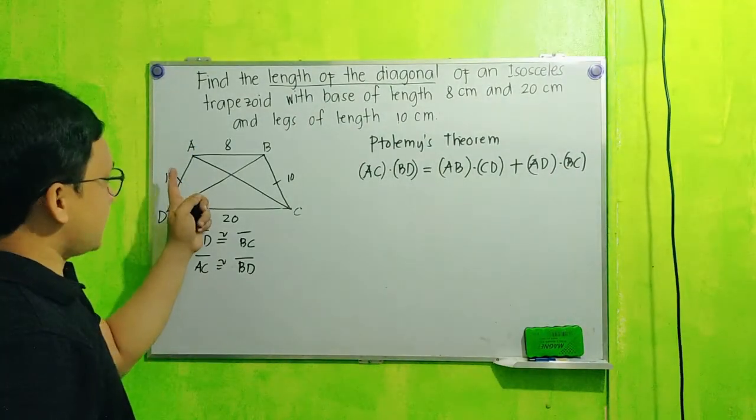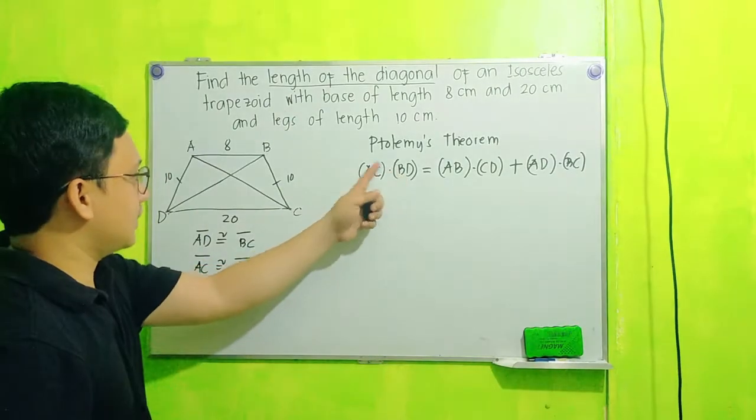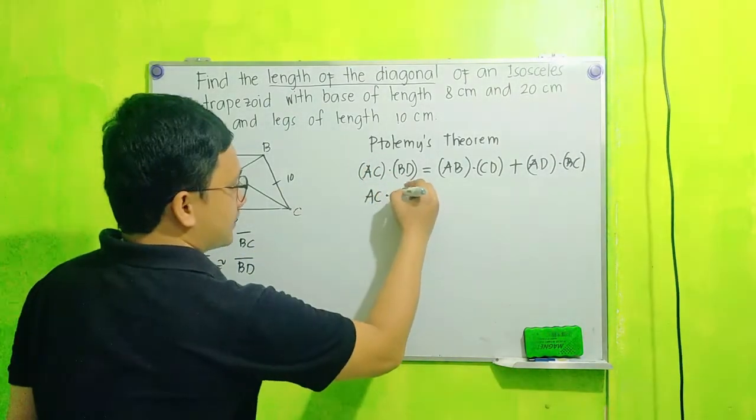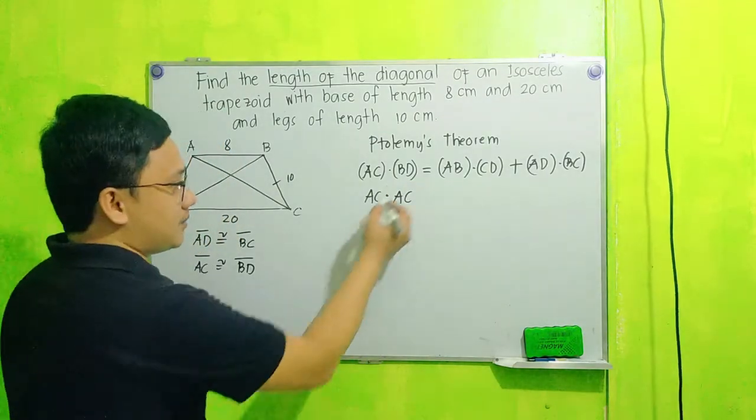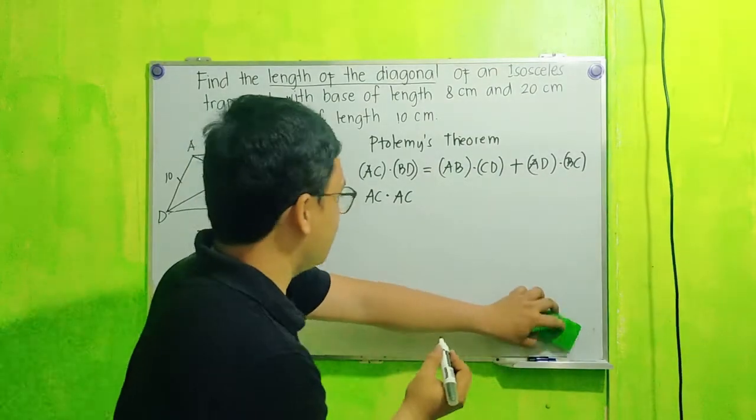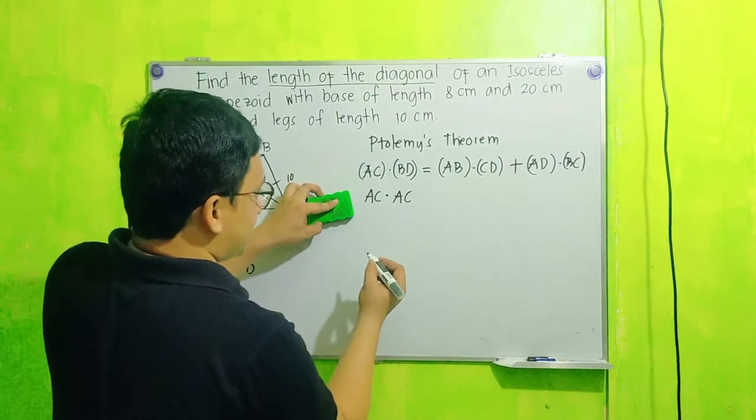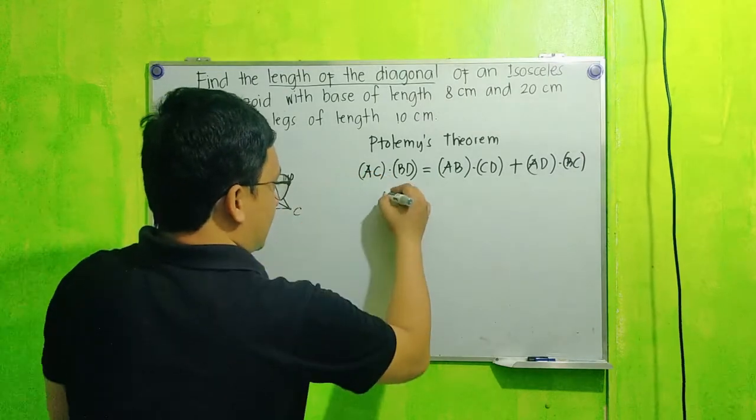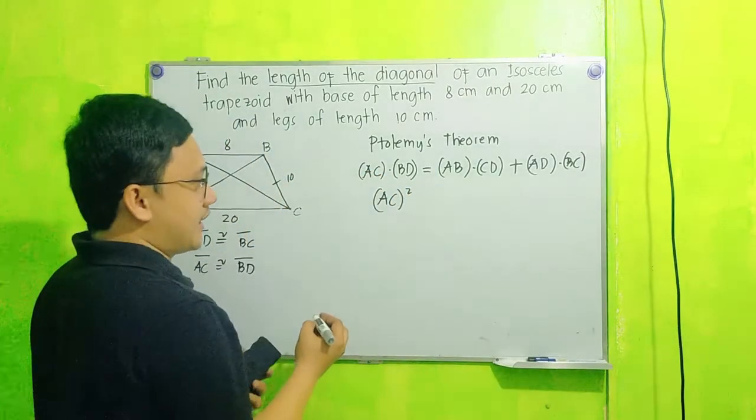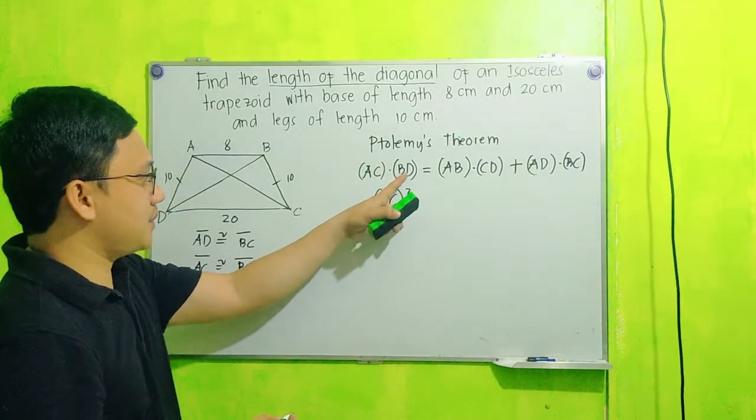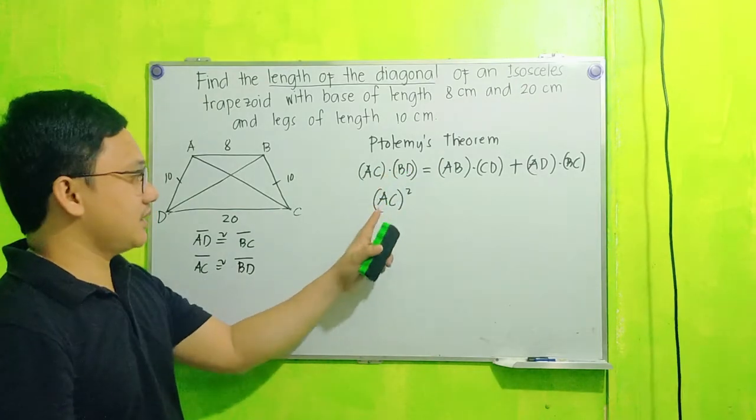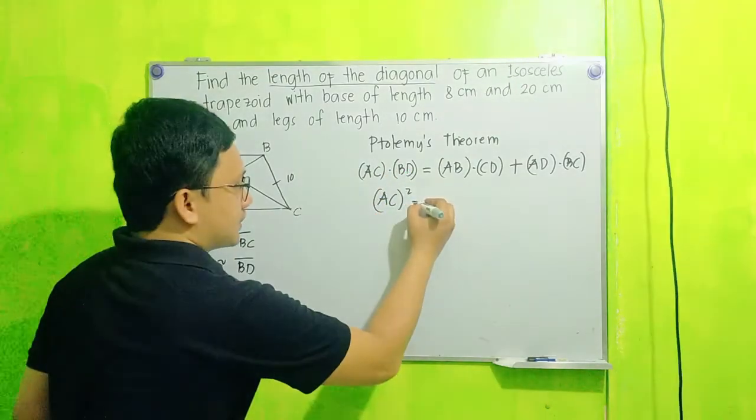Now since si AC natin tsaka BD, equal yan, ibig sabihin pwede siyang AC times AC. Kasi nga BD is equal to AC, ibig sabihin pwede natin i-multiply yan. AC times AC, that is AC squared. Again, si AC at saka si BD, BD is equal to AC, so pwede siyang AC times AC, and that is square of AC.